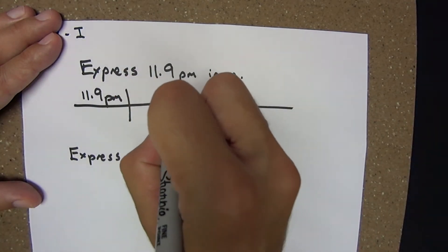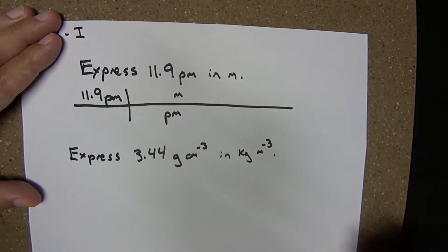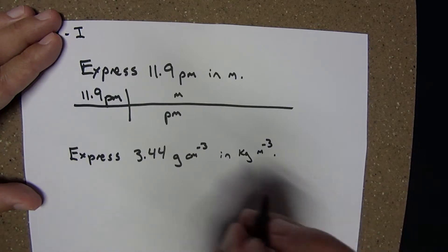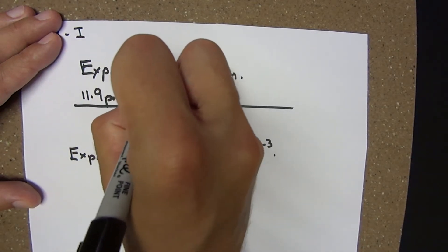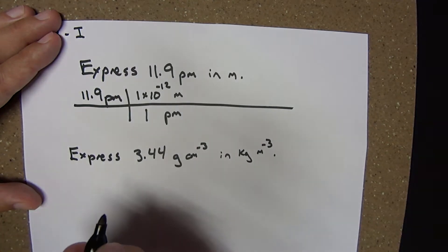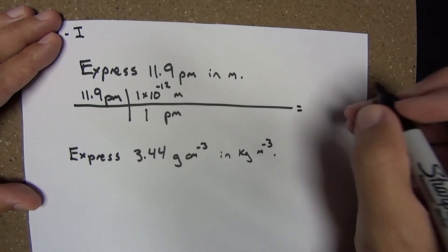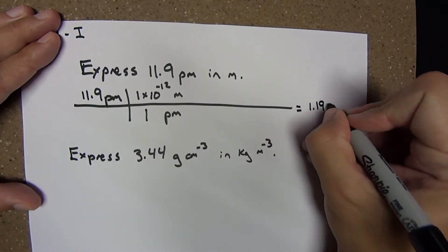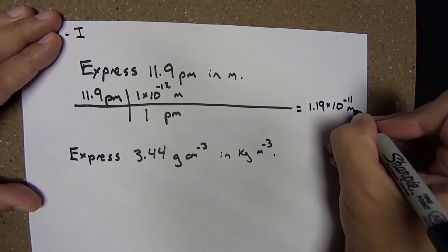We want picometers to cancel to be left with meters. I'm going to think of it as 1 picometer equals 1 × 10^-12 meters. Doing the arithmetic, we discover that equals 1.19 × 10^-11 meters.